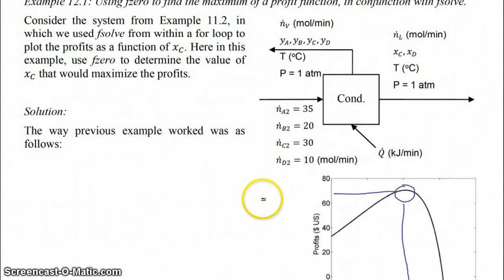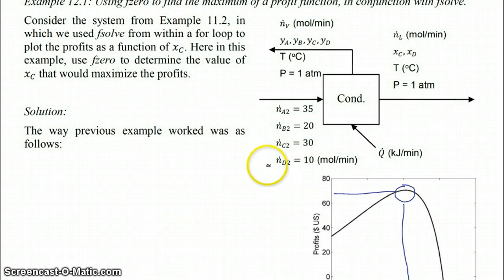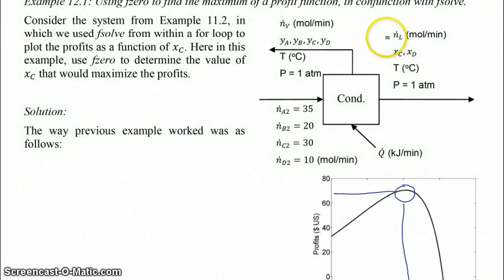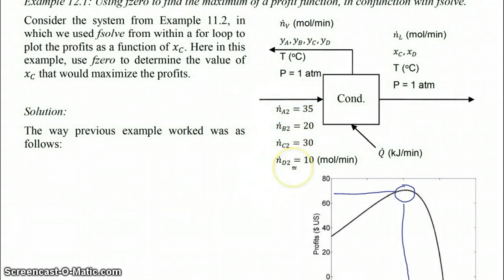What's going on here is that we have a condenser which is partially condensing out our desired product C but also our undesired byproduct D. This liquid stream is our product stream, and we want to keep a high purity as well as a high flow rate n_L. This comes from a reaction where A + B goes to C, with a side reaction A + C goes to D.